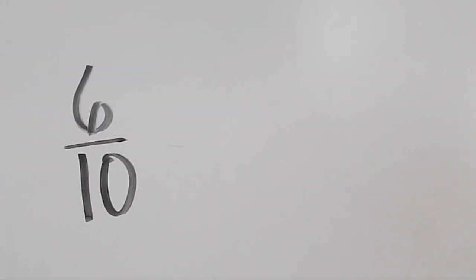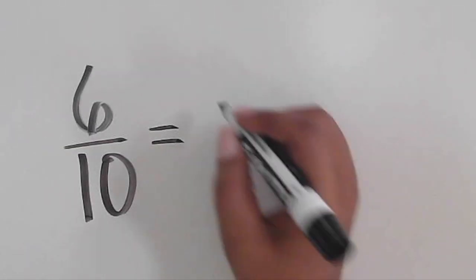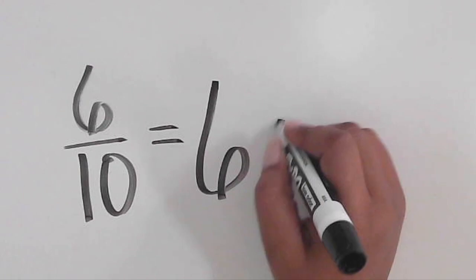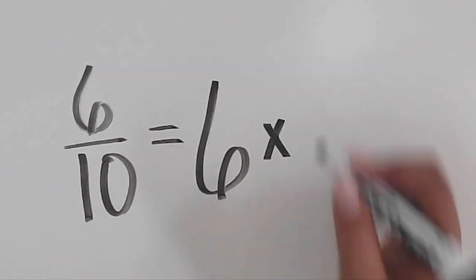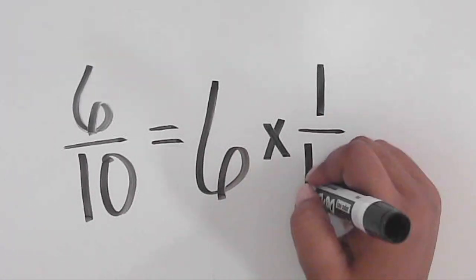In another example, we have the fraction six tenths. If this was the product, what would be the expression that equals this product? Well, six tenths is the same as six groups of one tenth.